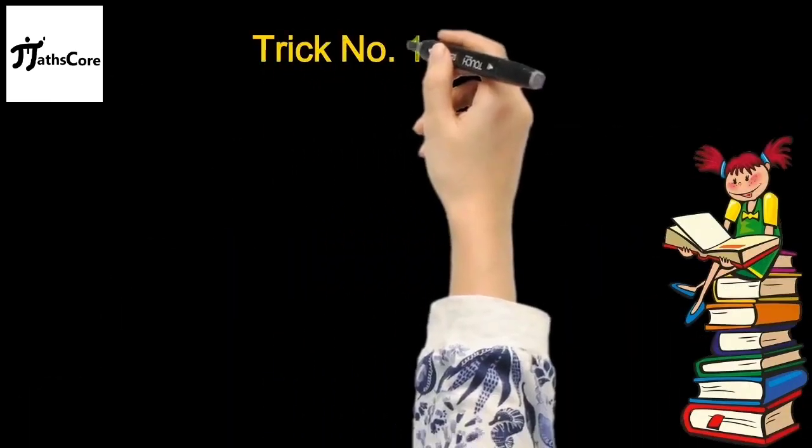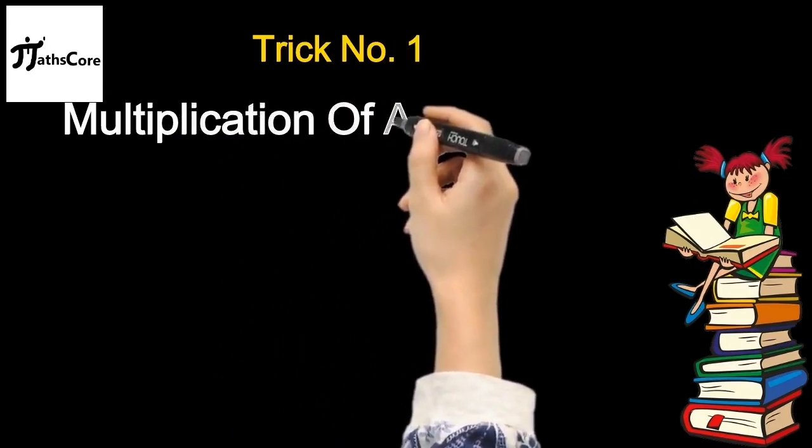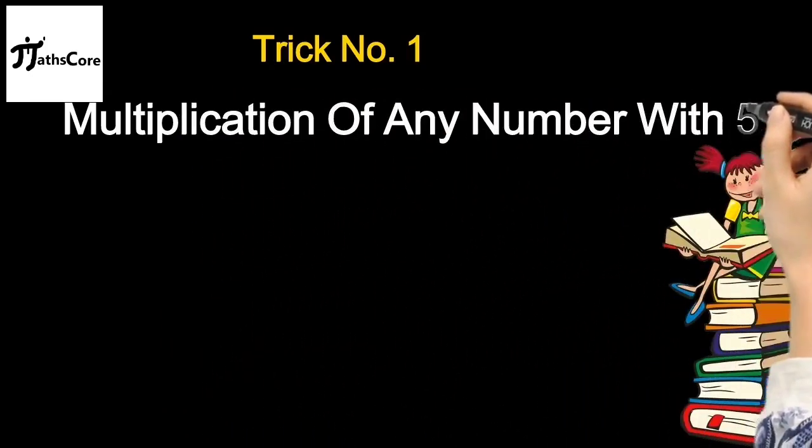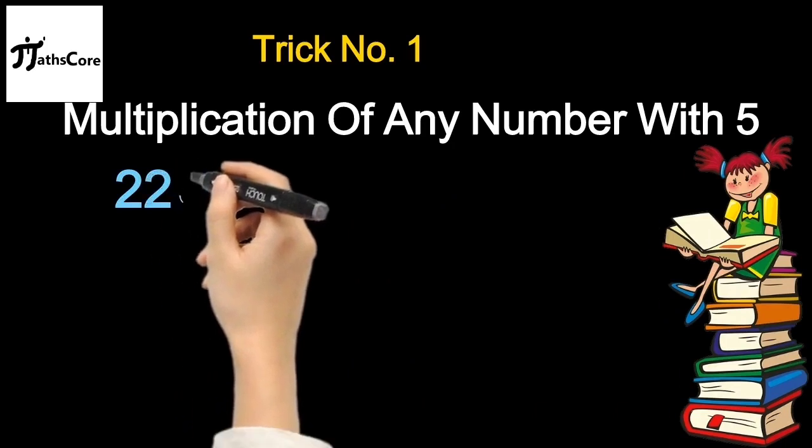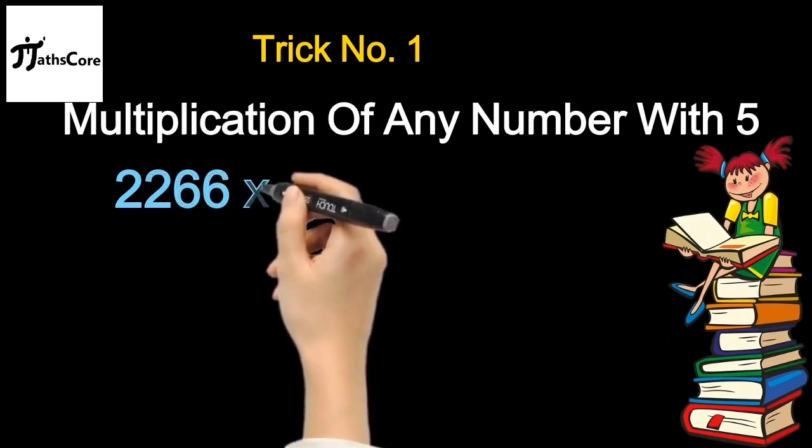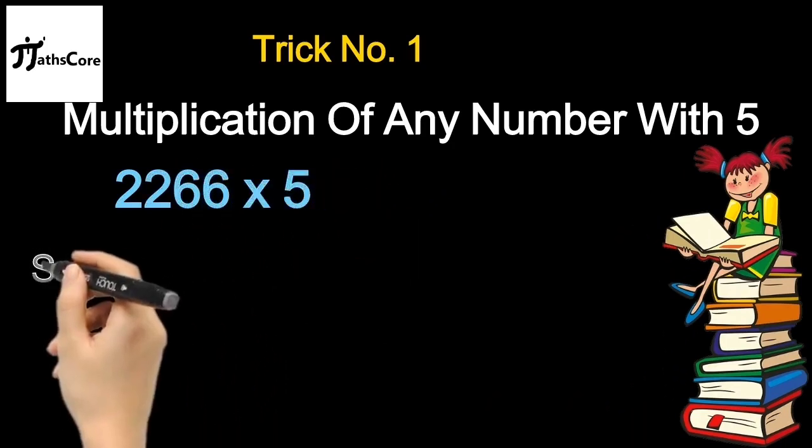Let's start with trick number 1. Multiplication of any number with 5. Example is 2266 multiply by 5. To solve this example within 2 seconds you need to follow 2 steps.